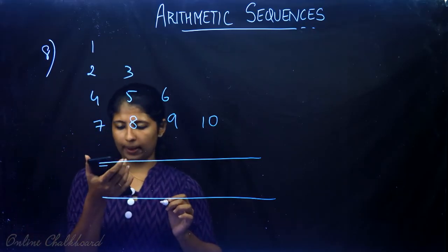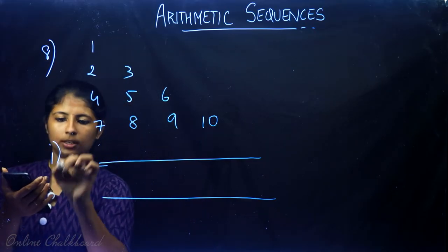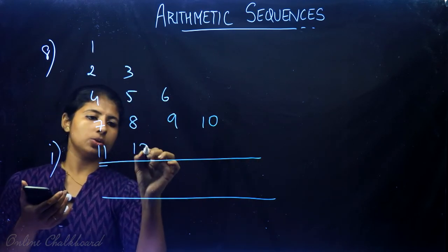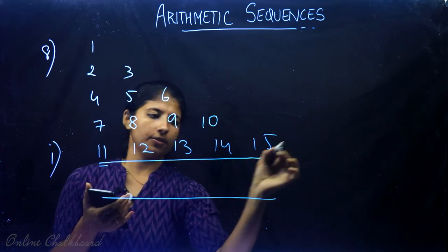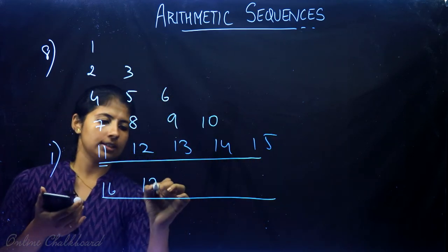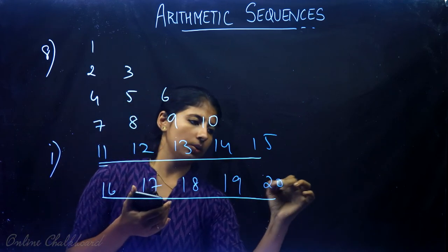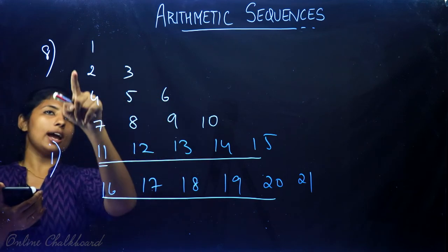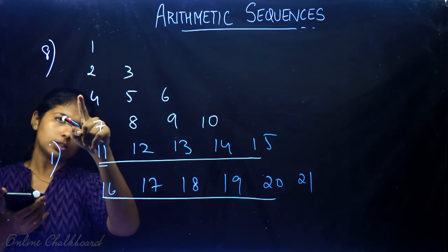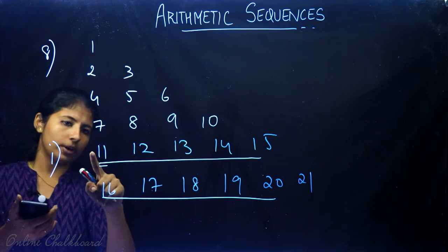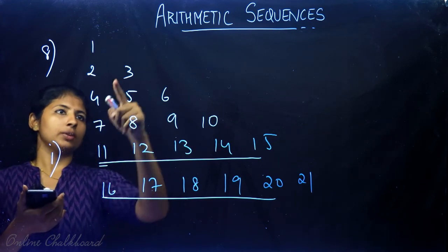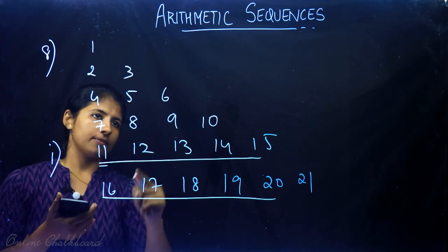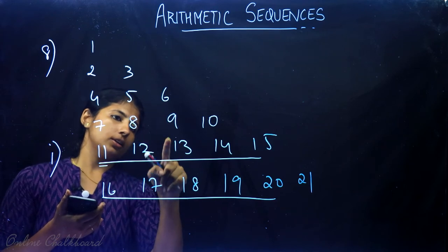Write the next two lines of the pattern. The first part: the next two lines are 11, 12, 13, 14, 15, 16, 17, 18, 19, 20, 21. The pattern continues as: line 1 has 1 term, line 2 has 2 terms, and so on.